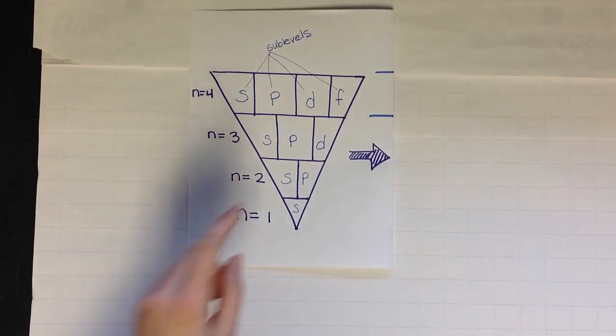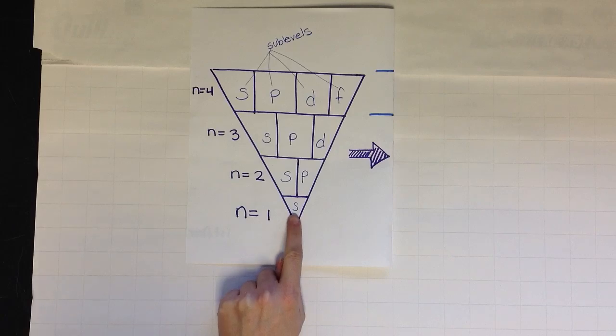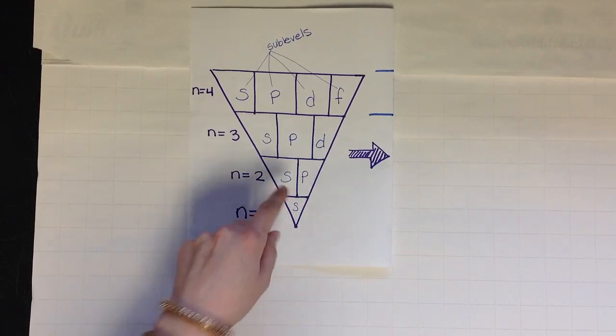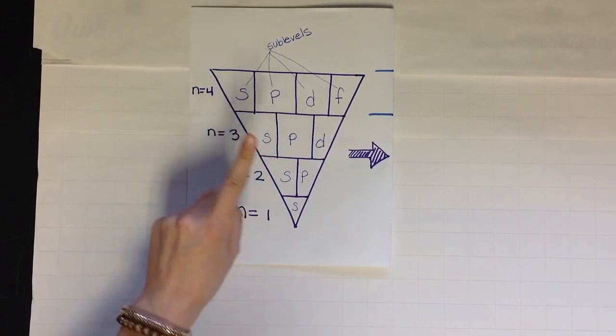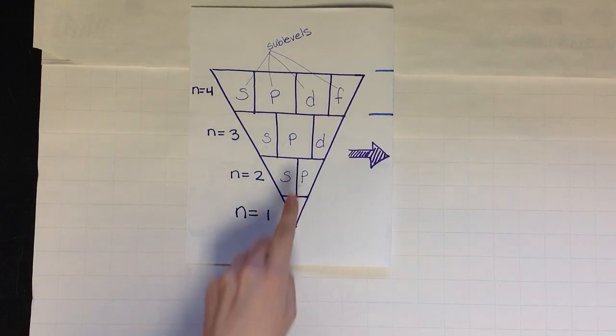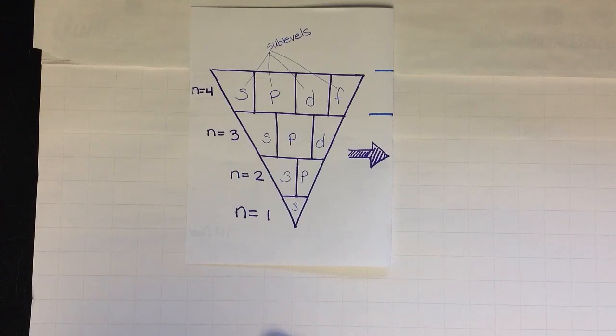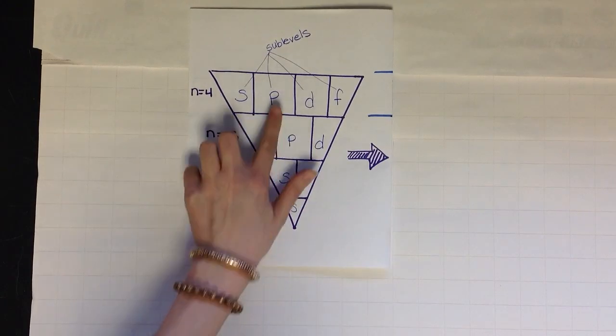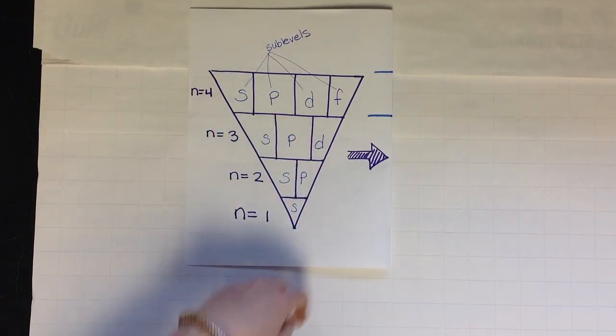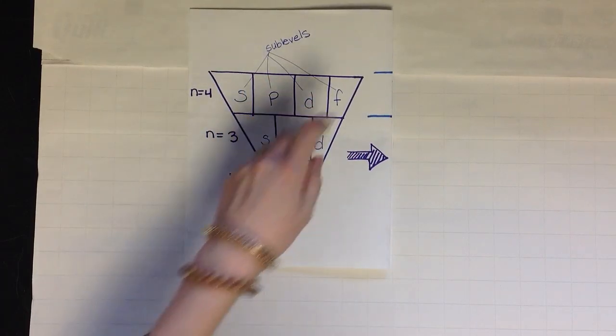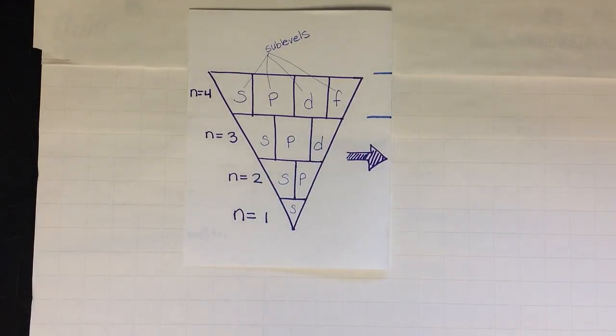In sub-level S, there's only one orbital. Sub-level S, one orbital. Sub-level S, one orbital. Sub-level S, one orbital. In sub-level P, there are three orbitals. That's a lot. Three orbitals in P, three orbitals in P. In sub-level D, there's five orbitals. Five. And in sub-level F, which you notice doesn't happen often, there are seven orbitals.